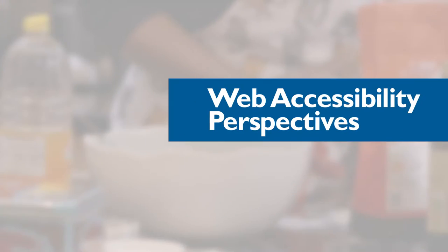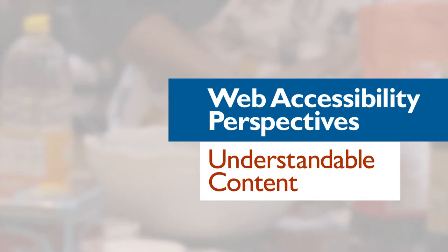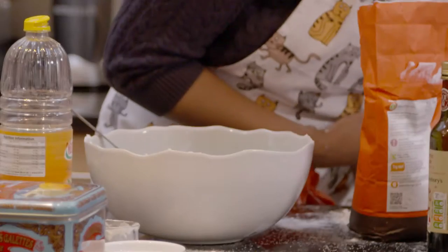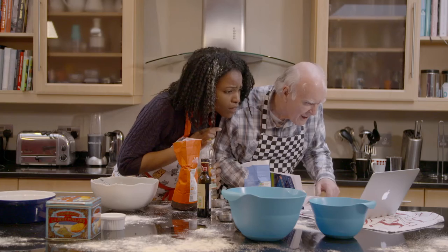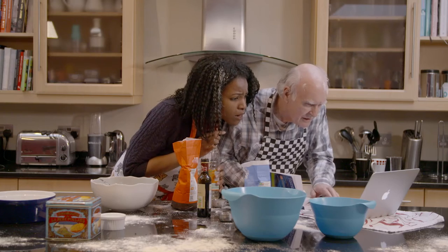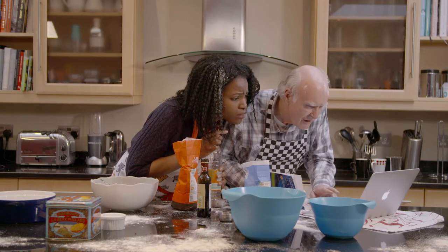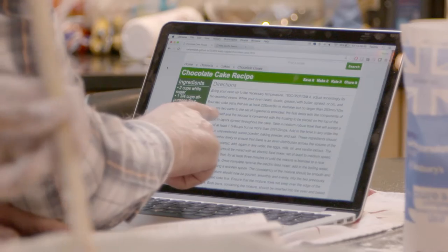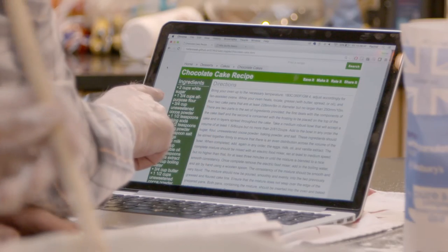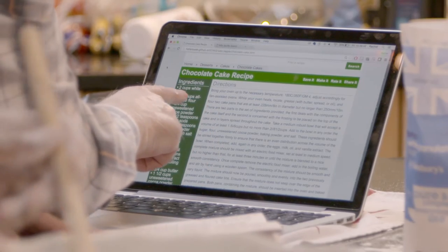Web Accessibility Perspectives. Understandable content. Two people are trying to follow instructions on a cooking website using lots of text with no illustrations or structure. Instead of saying,